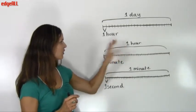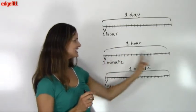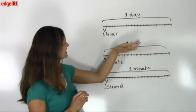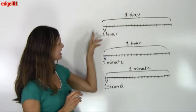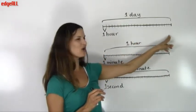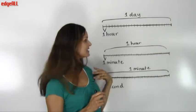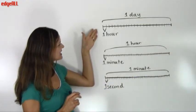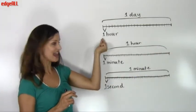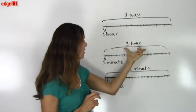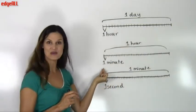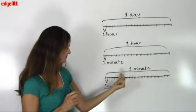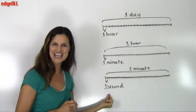One hour is equal to sixty minutes, and one day is equal to twenty-four hours. So you can see that a day is bigger than one hour, an hour is bigger than one minute, and a minute is bigger than one second.